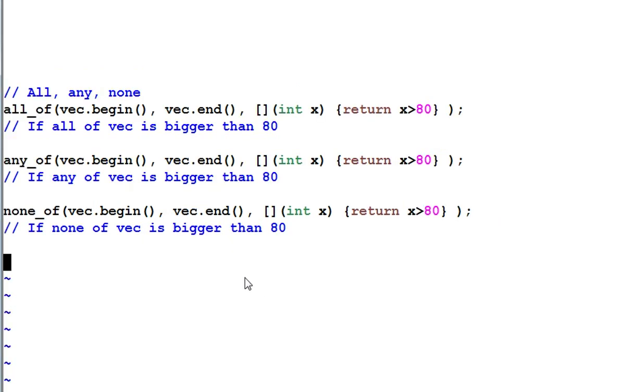The last three functions are actually pretty useful. All of. Check if all of the data matches this condition. Any of. Check if any one of the data matches the condition. And none of. Check if none of the data matches the condition of larger than 80.